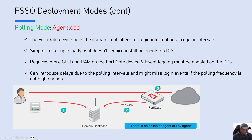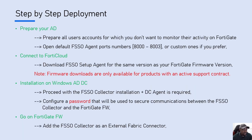The fallback of the agentless mode is that it can introduce some delay due to the polling interval and may miss some login events if the polling frequency is not as high as in the other methods. Those are the three deployment modes of FSSO.